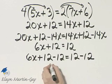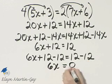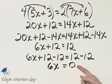Now let's simplify. On the left, I have 6x. On the right, 12 minus 12 is 0. That is a good number.